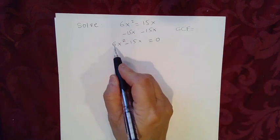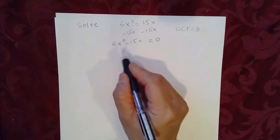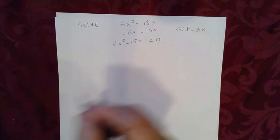Here we have 6 and 15. The greatest common factor of 6 and 15 is 3. And we have x squared and x. The greatest common factor is x. That's common to both of them.